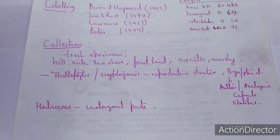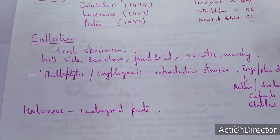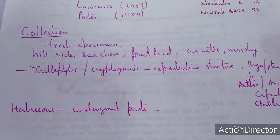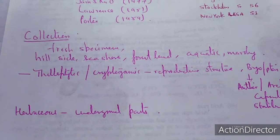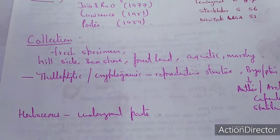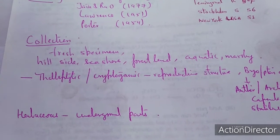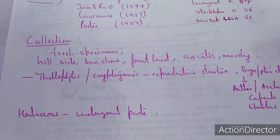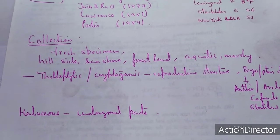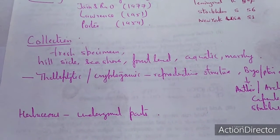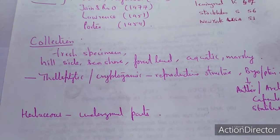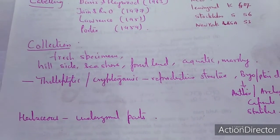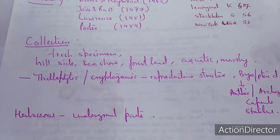Once we are going for the preparation of the herbarium, we need the collection of the plant. Fresh specimen is the first target. For example, if we are collecting angiosperms, we need the inflorescence as well as the fruiting period — fruit must also be there. We must consider in which ecological condition we can get that particular type of plant: hillside, sea shore, forest land, aquatic or marshy places.